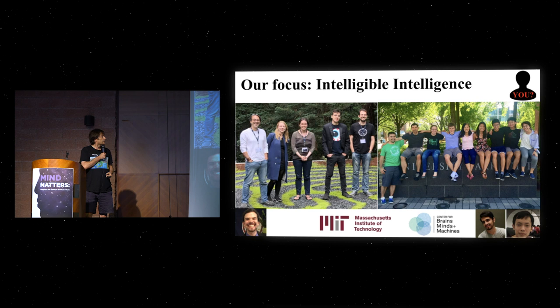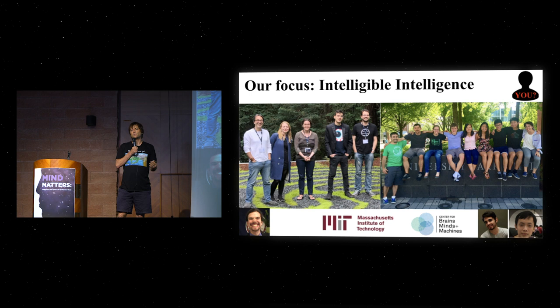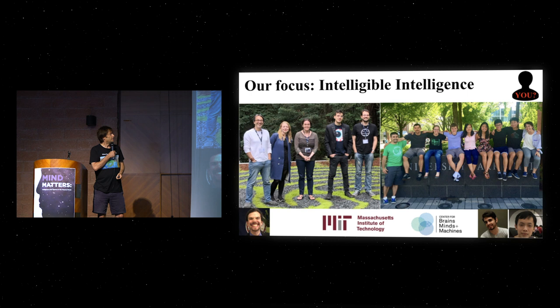To help with this, my group at MIT is focusing on what we call intelligible intelligence, where we want to make systems not just smart but actually trustworthy because we can understand better what they're doing. This is something I'm going to argue that we physicists can really help with, and I'll give you two examples.